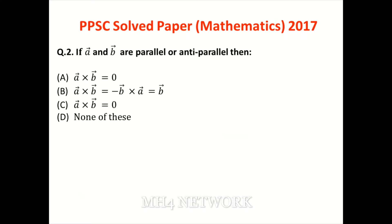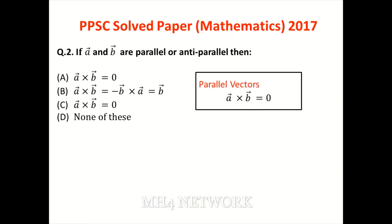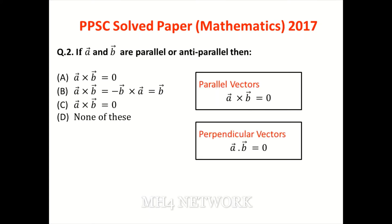Question number two: A and B are parallel or anti-parallel. Is mein doh options repeat hain aur question ki statement bhi sahi nahi hai. Agar vectors parallel hain toh unka cross product zero ke equal hoga, aur agar perpendicular hain toh unka dot product zero ke equal hoga. Options A aur C dono sahi kaha ja sakte hain — statement clear nahi hai.